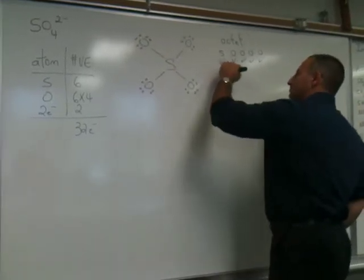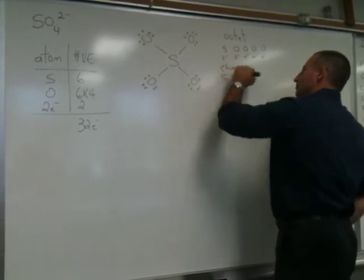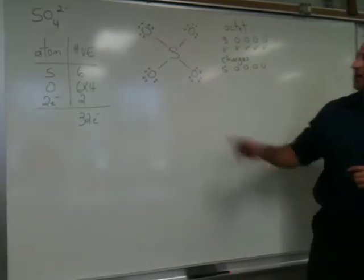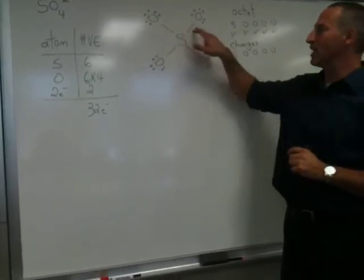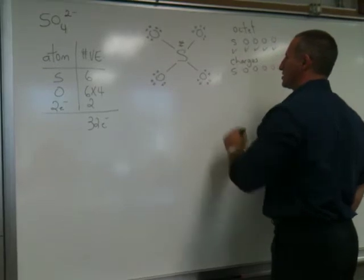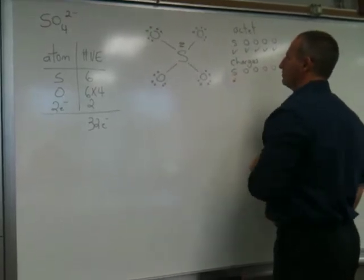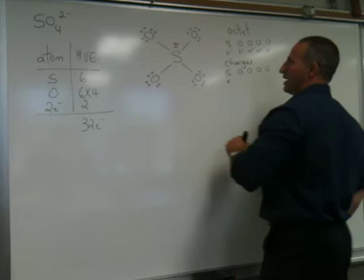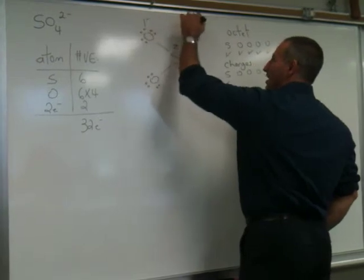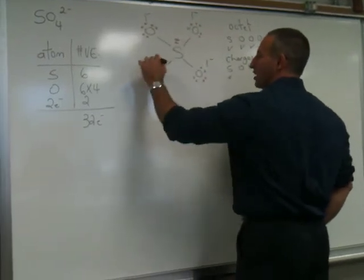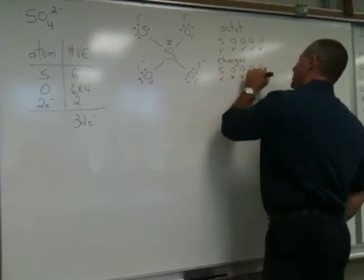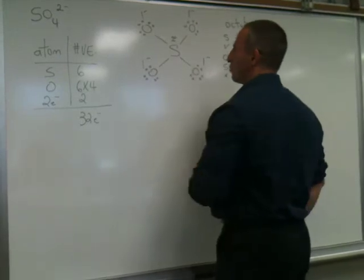For the charges, sulfur would normally have 6 valence electrons, but it only actually possesses 4, because each one of these counts for 1 when it comes to counting up charge. So sulfur would have a plus 2 charge under these conditions. And I think we can get a more stable structure than that. The oxygen atoms as well have 7. So each one of the oxygen atoms in this drawing would have a negative 1 formal charge. So we have lots of formal charges in this molecule. I think we can modify the diagram to reduce at least some of those formal charges.